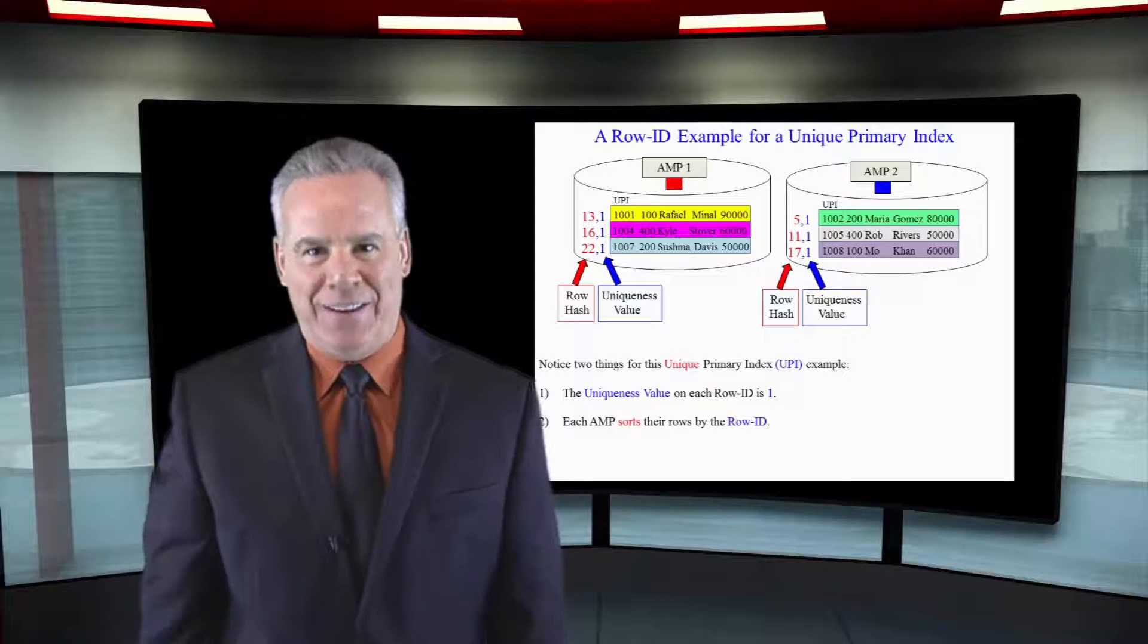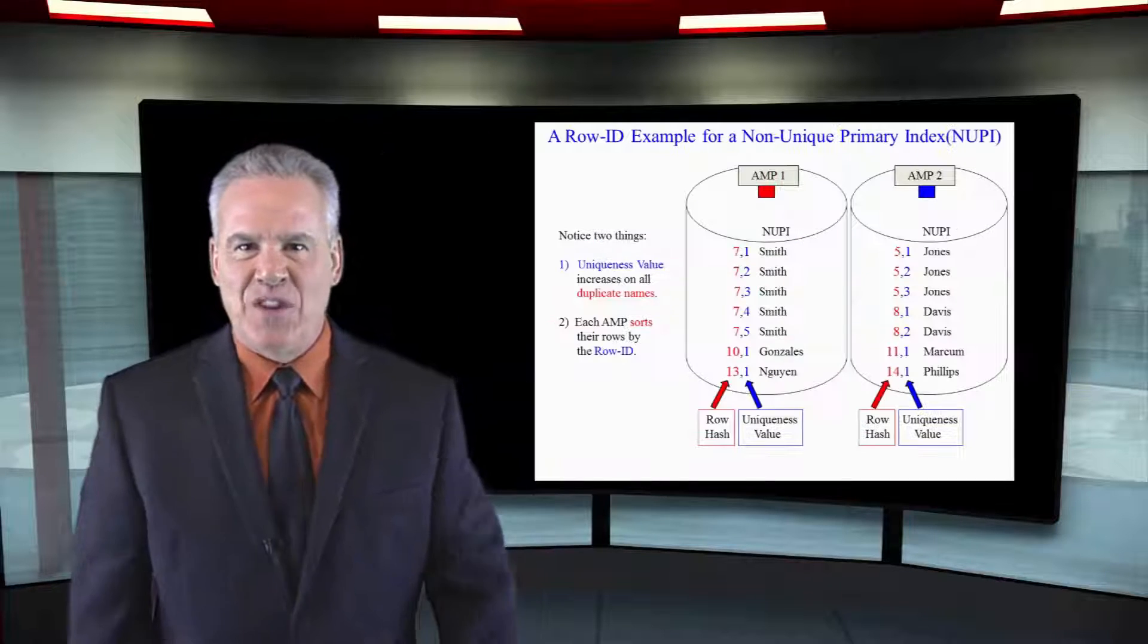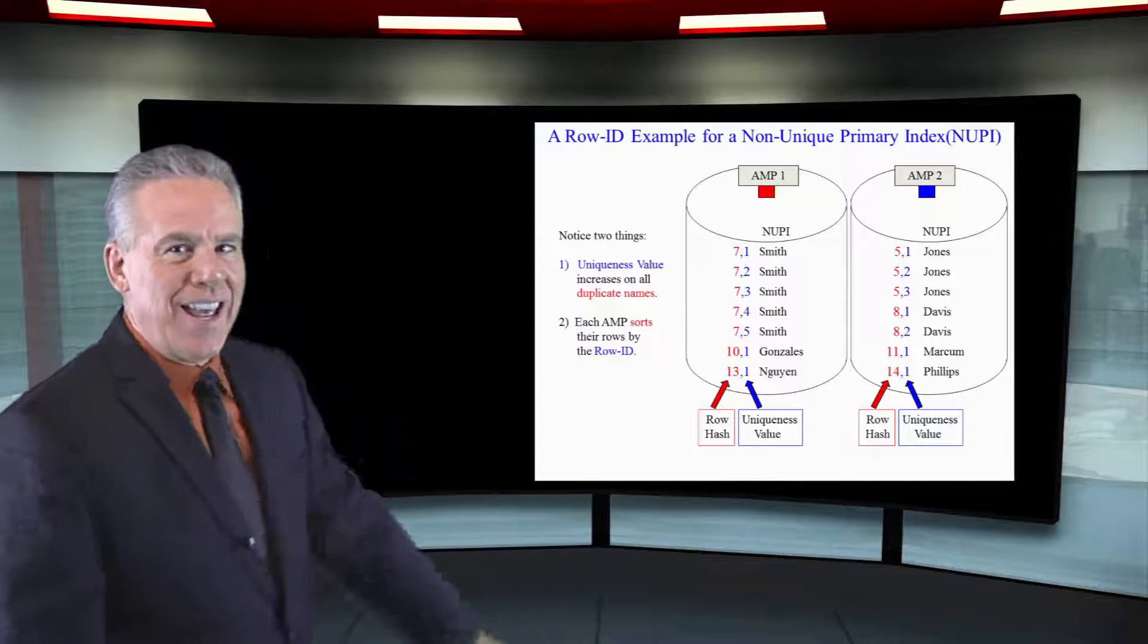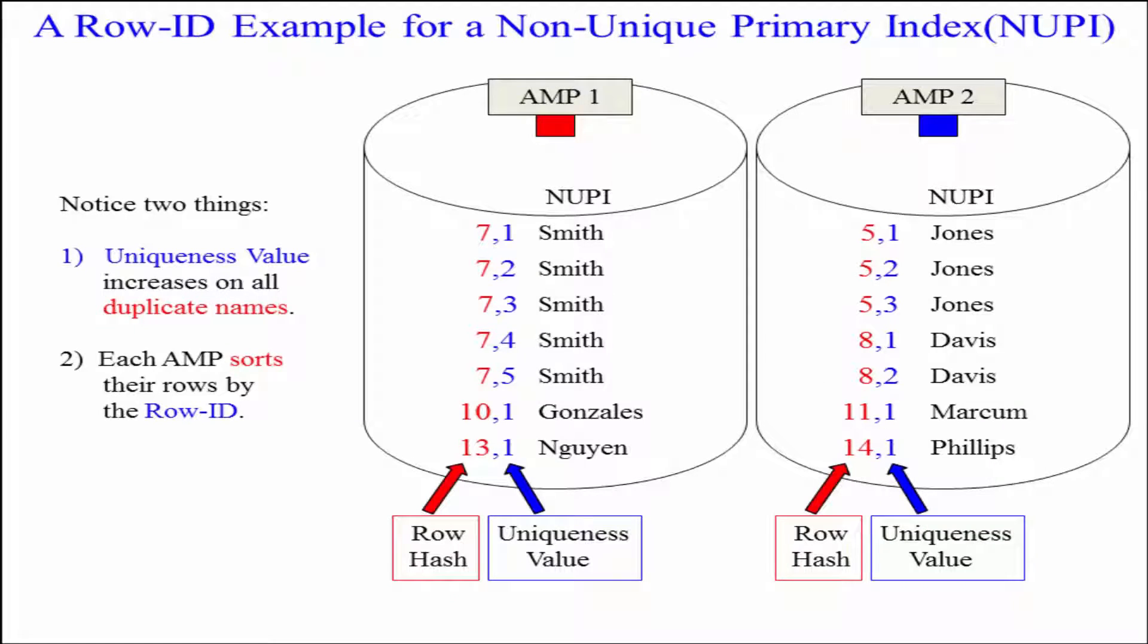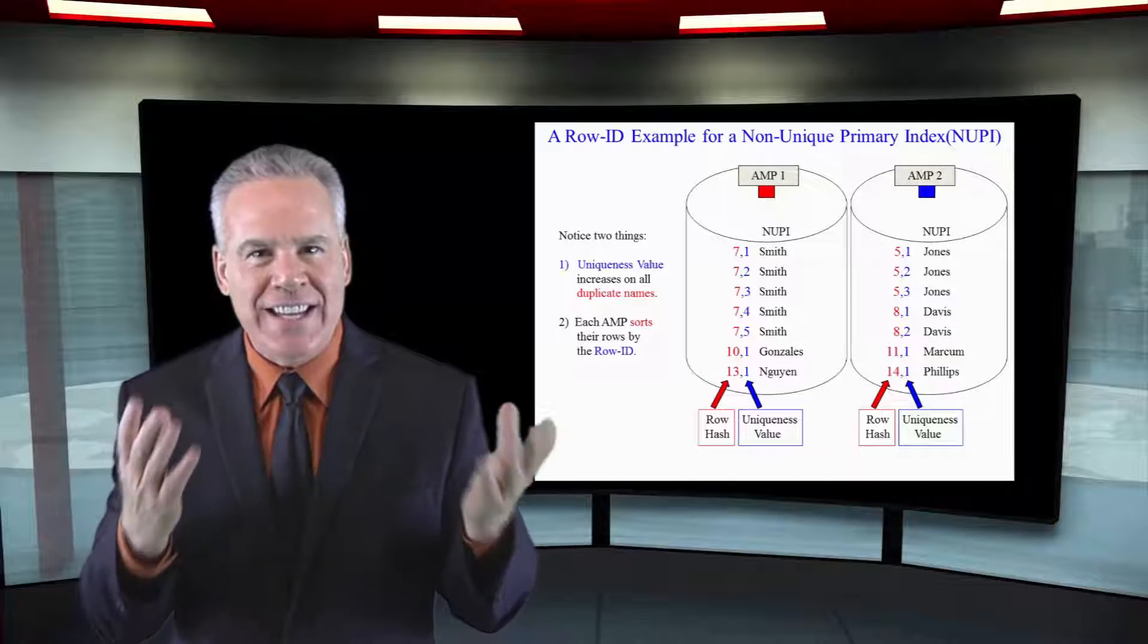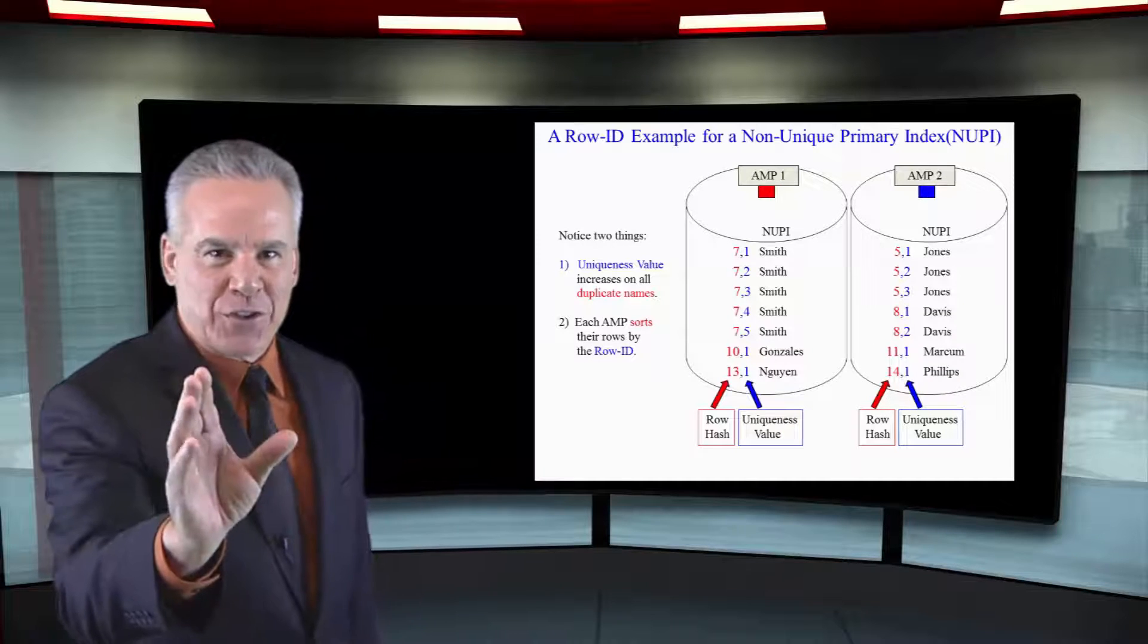We'll understand that in a few minutes. Take a good look at this and you're going to say to yourself, it's almost as if each AMP does sort those rows by the row ID. I go every time, see the data and you can master Teradata.